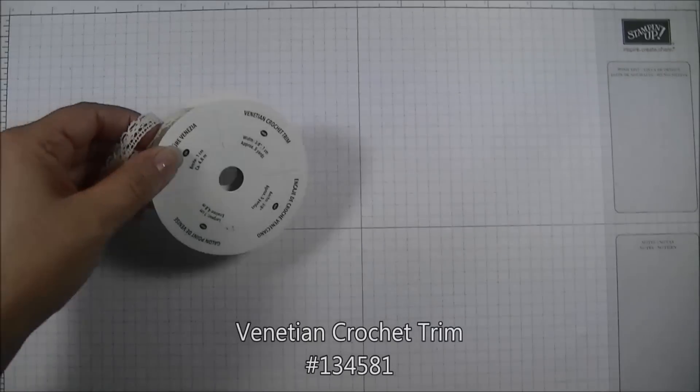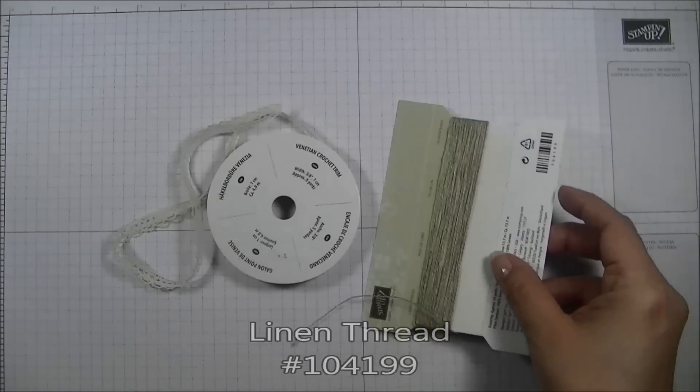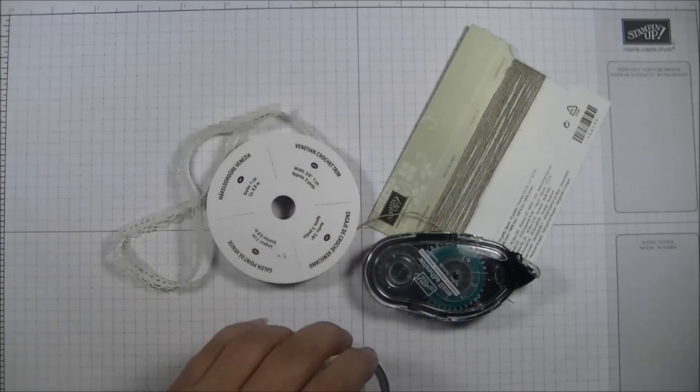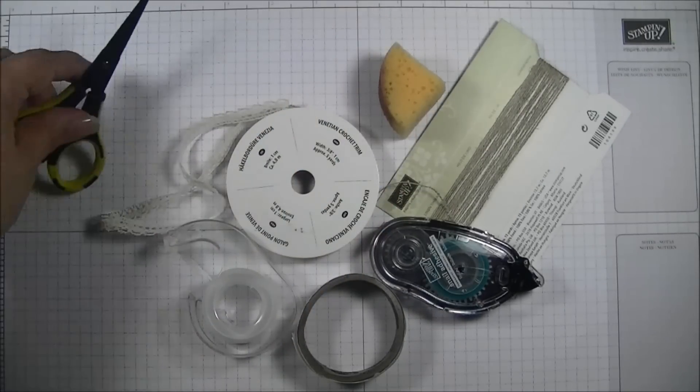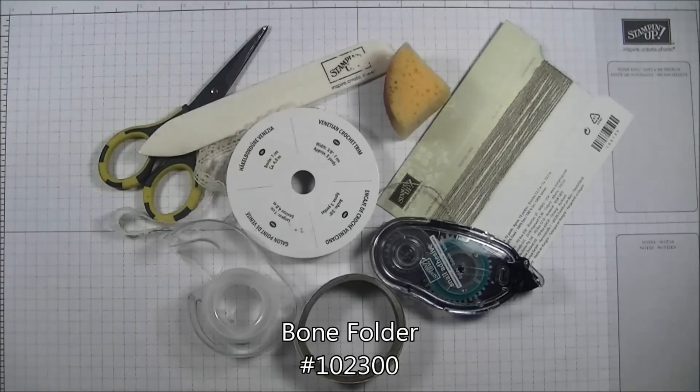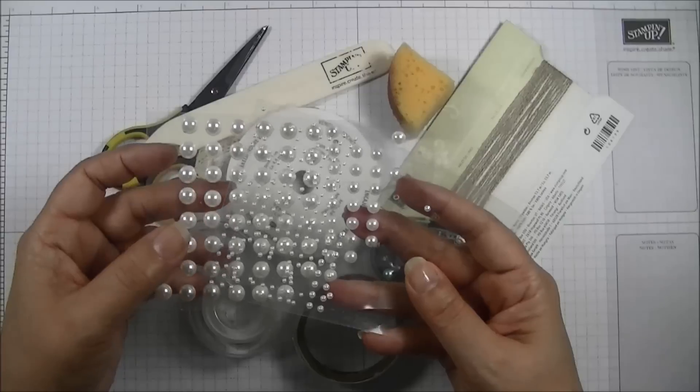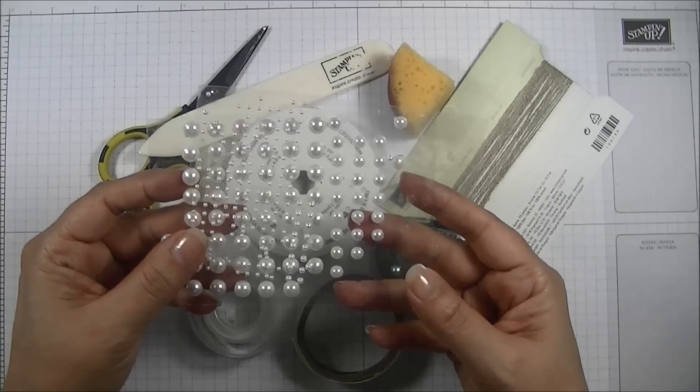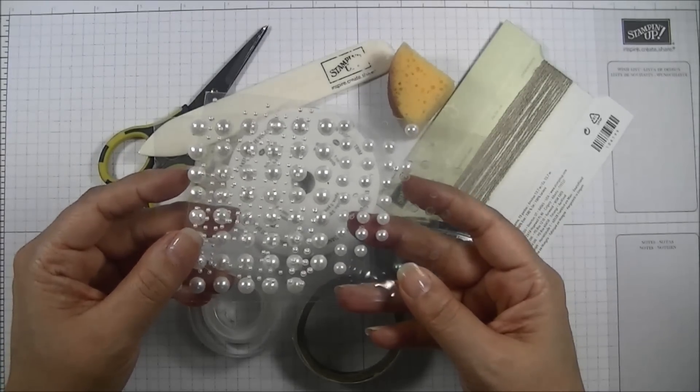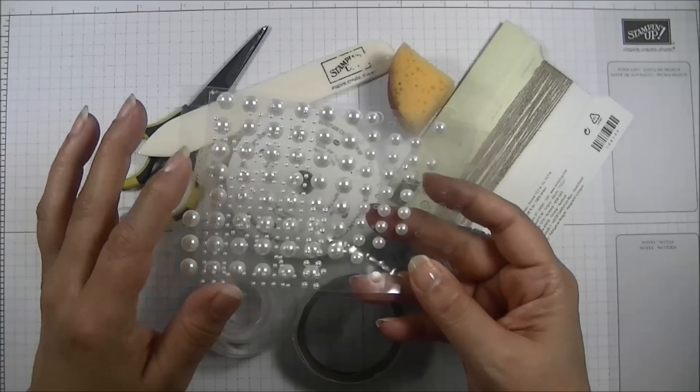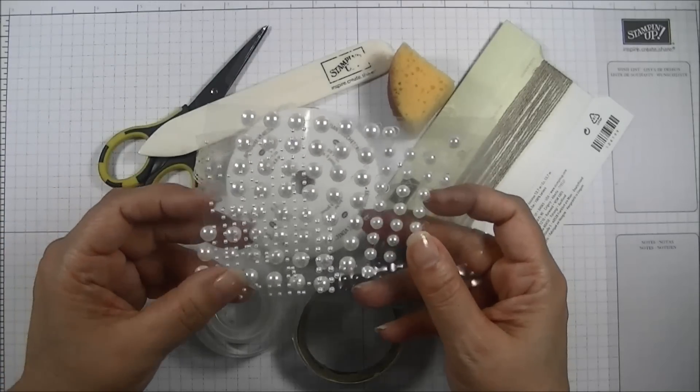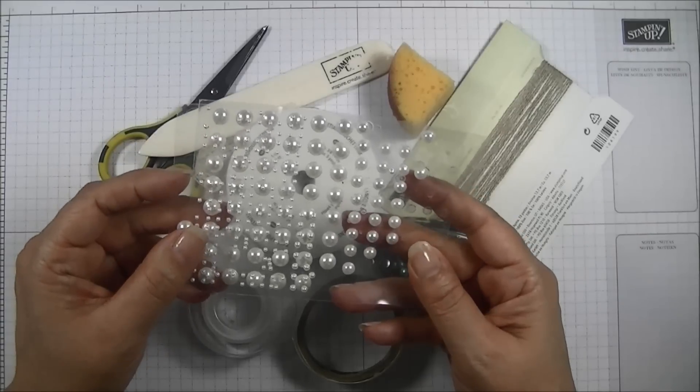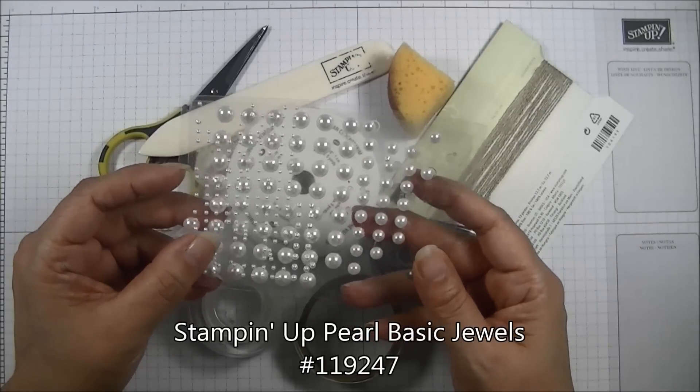Some of the other supplies that we will be using today are the Venetian Crochet Trim, the Linen Thread, my Snail Glue Dots, Scotch Tape, Sponge, Scissors, Bone Folder. Finally, I will be using these lovely pearls. Once again, these are not Stampin' Up! I picked these up from a local arts and crafts outlet store. However, Stampin' Up! does make some lovely pearls that can be used for this project and I will include that product number on my supply list.